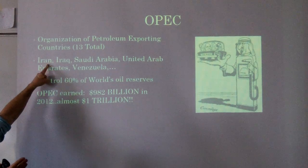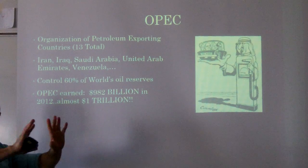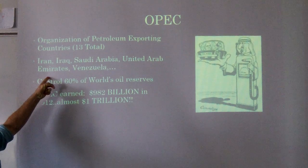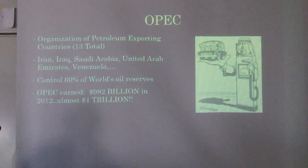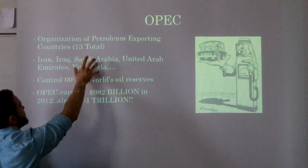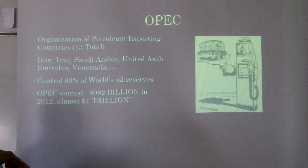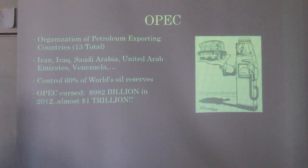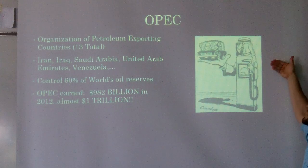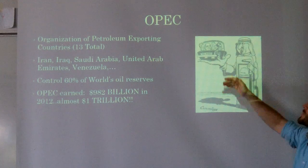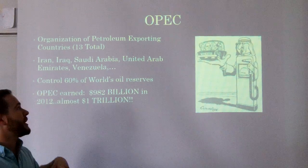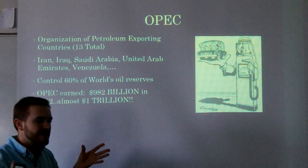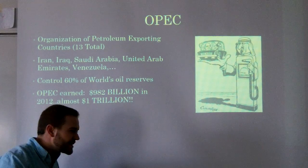Iran, Iraq, Saudi Arabia — you're familiar with these because of ongoing crises in the Middle East. The United Arab Emirates is the area where Dubai is located, one of the wealthiest places on earth with more billionaires per capita than anywhere else. Venezuela is the only OPEC member not in the Middle East. OPEC controls 60% of the world's oil reserves and earned $982 billion in 2012 — almost a trillion. This is why there's such a push to become energy independent — to get off energy needs from countries tied to terrorist activities.